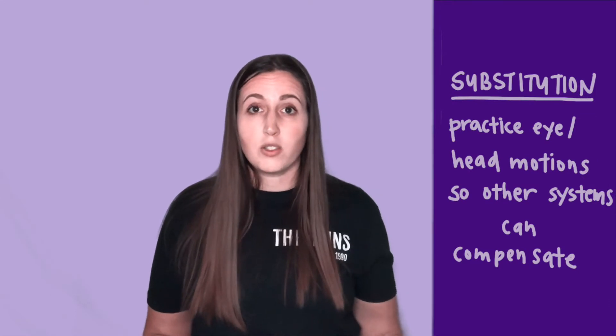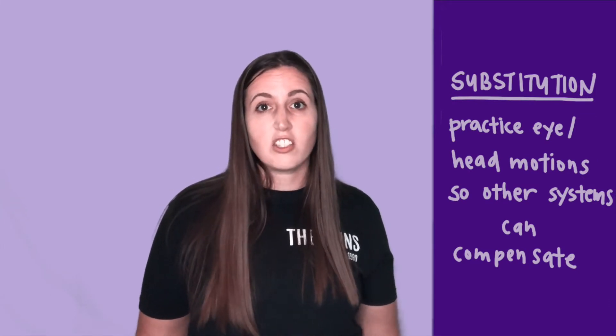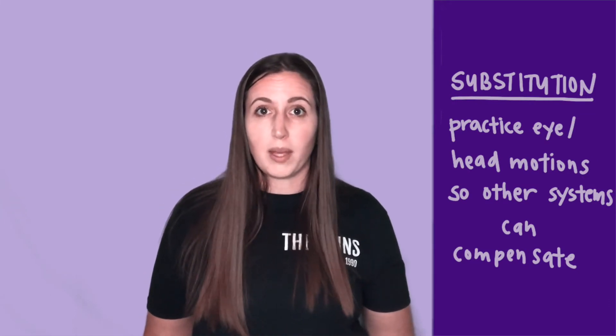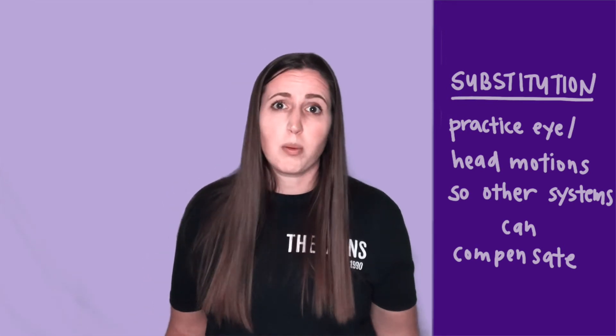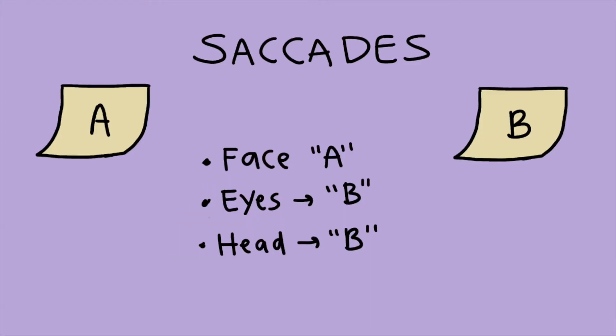The third way is substitution with other strategies to change central programming. There are a lot of different ways you can do this. For patients that have trouble with saccades, you can hold up two sticky notes — one with an A and one with a B on it — in front of them. You'll have the patient start by looking at A, turn their eyes to B, and then turn their head to B, and have them repeat this until they're successful at it.